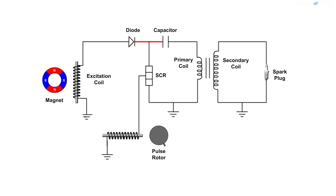When the magnet rotates further, the direction of current changes. Because of this, the capacitor tends to discharge its stored charges. But the diode, which allows current in only one direction, prevents the capacitor from discharging. However, when the triggering coil gets excited, a small current passes to the SCR and triggers it, making the SCR allow the capacitor to discharge.